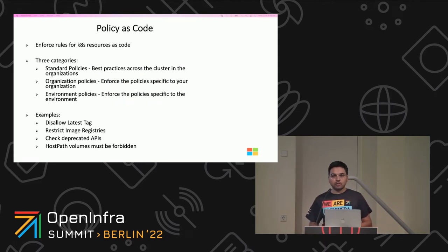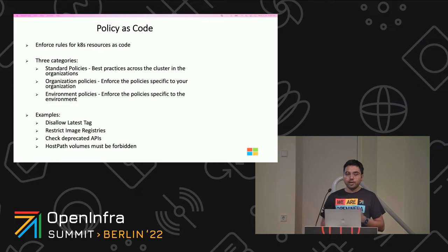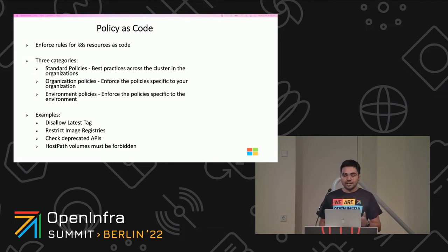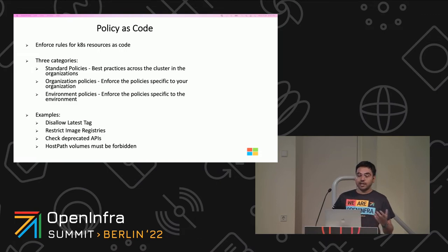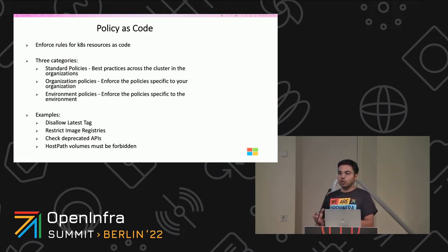Moving on to another section: policy as code. What is policy as code? It is writing code in a high level language to manage and automate policies, which means you can store these policies in your version control system like Git. You can use these policies in audit or enforcement mode to monitor existing workloads and services for misconfiguration, or prevent misconfiguration from being applied in the cluster. When designing these policies, you should broadly categorize them into three categories: standard policies — best practices across the cluster in your organization, such as requiring resources to specify resource limits or preventing workloads from running as root; organizational policies specific to your organization, for example enforcing a private image repository list; and environmental policies, where your production environment will require more stricter policies.